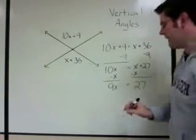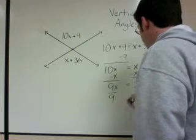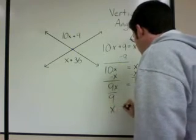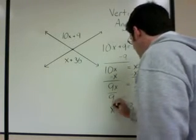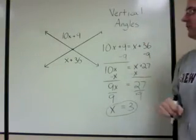Then all that's left is to divide by 9. So divide by 9, divide by 9, x equals 3. So there's an algebra problem using vertical angles.